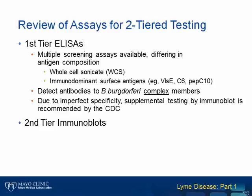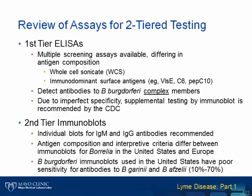Moving on to second-tier testing, evaluation of both IgM and IgG antibodies individually by immunoblots is recommended depending on the stage of infection. IgM antibodies can remain elevated and detectable for months following infection; therefore, in individuals with more than 30 days of symptoms, IgM positive results are of limited value. Immunoblots used in the United States and in Europe differ both in the antigens used and the applied interpretive criteria. Blots used in the United States are specific for infection with Borrelia burgdorferi, and a number of studies have shown their sensitivity for detection of antibodies to the European strains is low, ranging from 10 to 70 percent. Therefore, individuals infected in Europe may be negative by the assays available in the United States, and directed testing using European-based Borrelia blots is recommended.